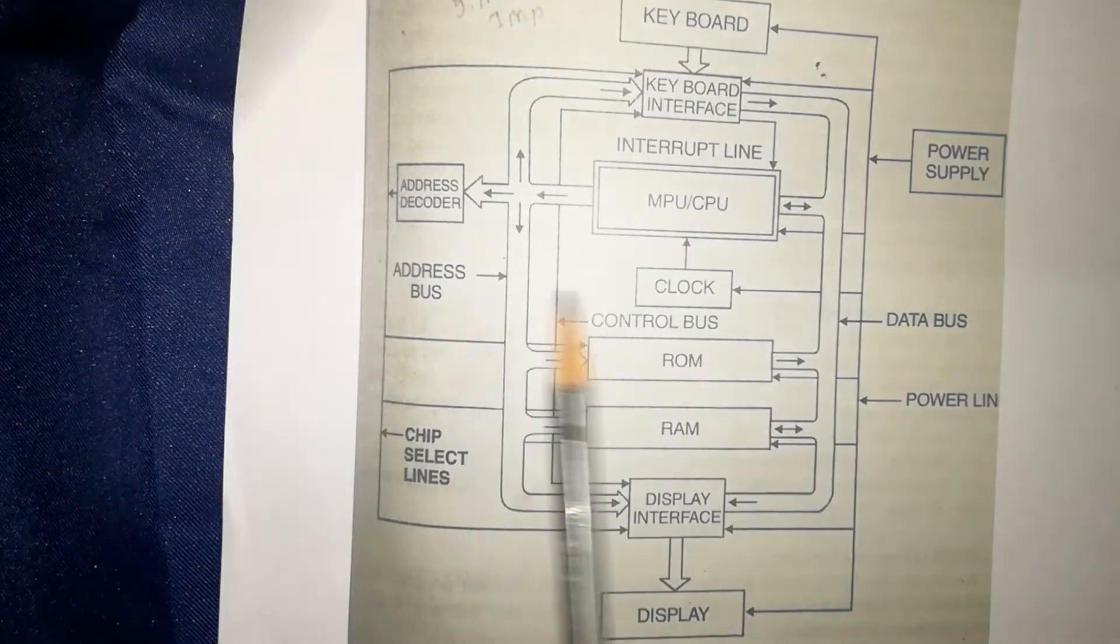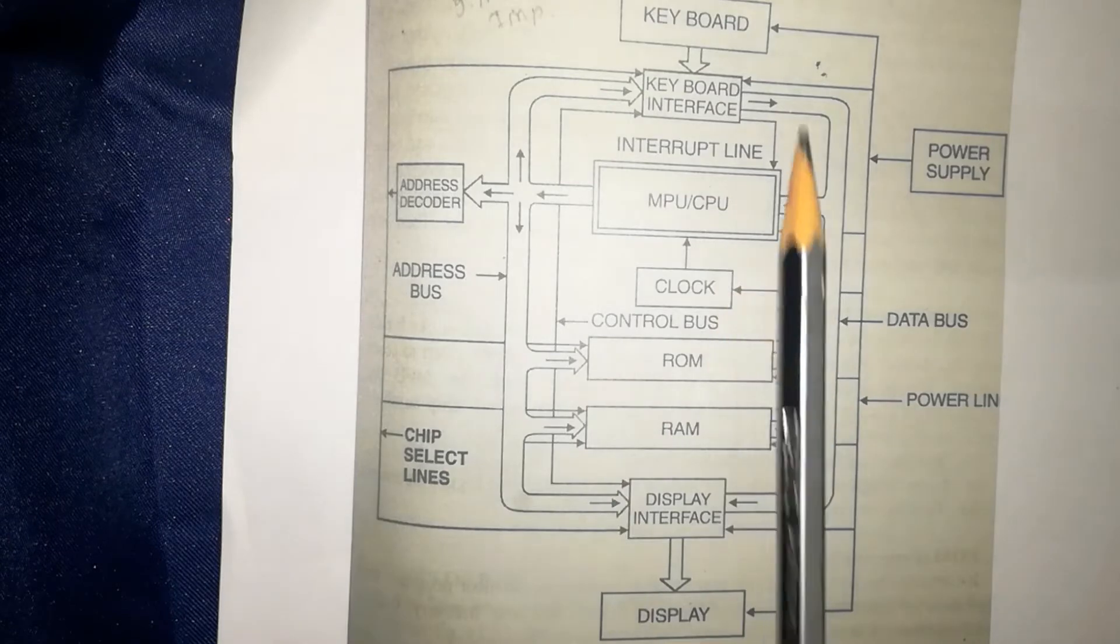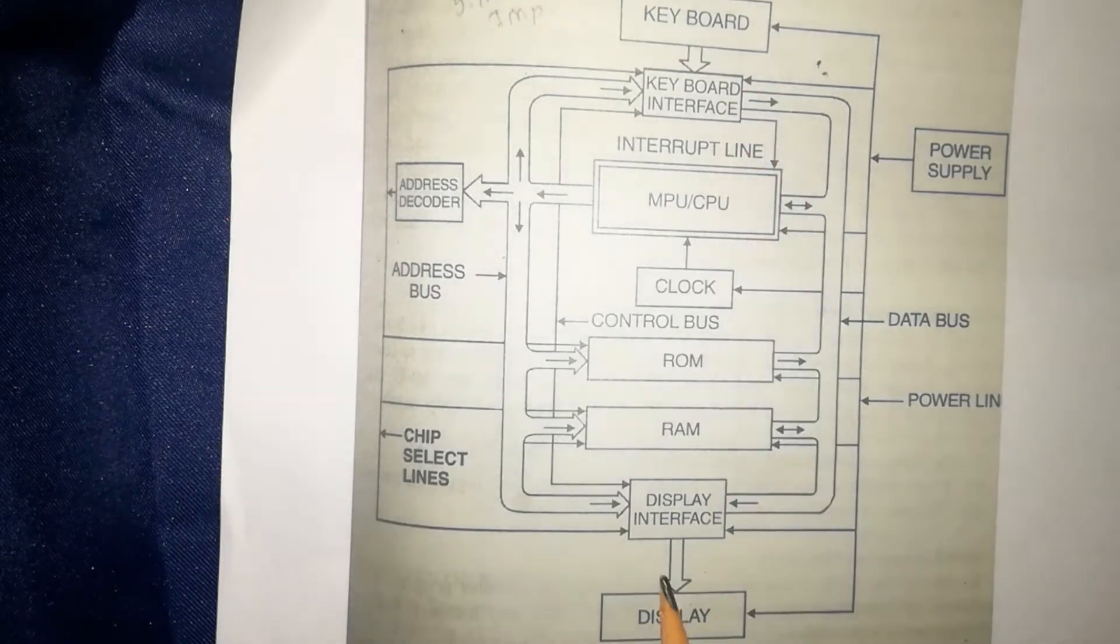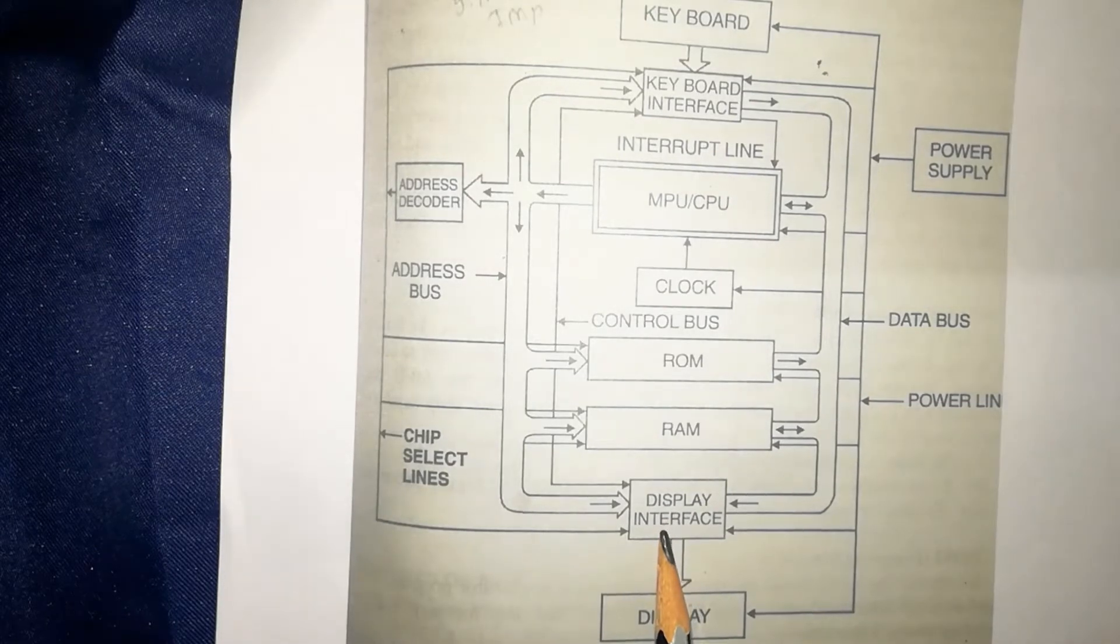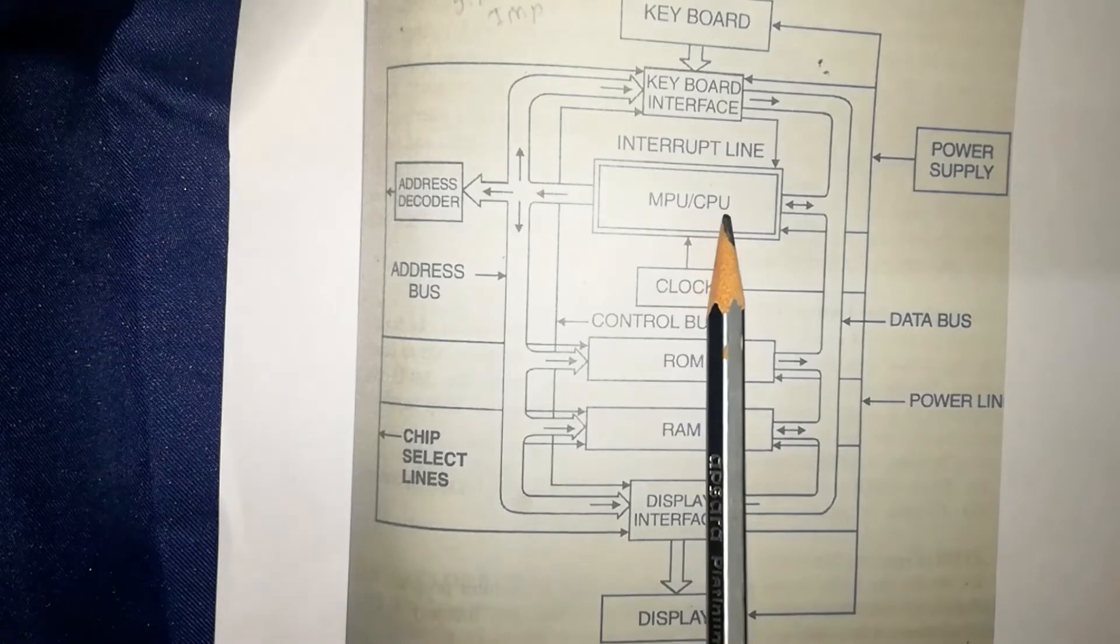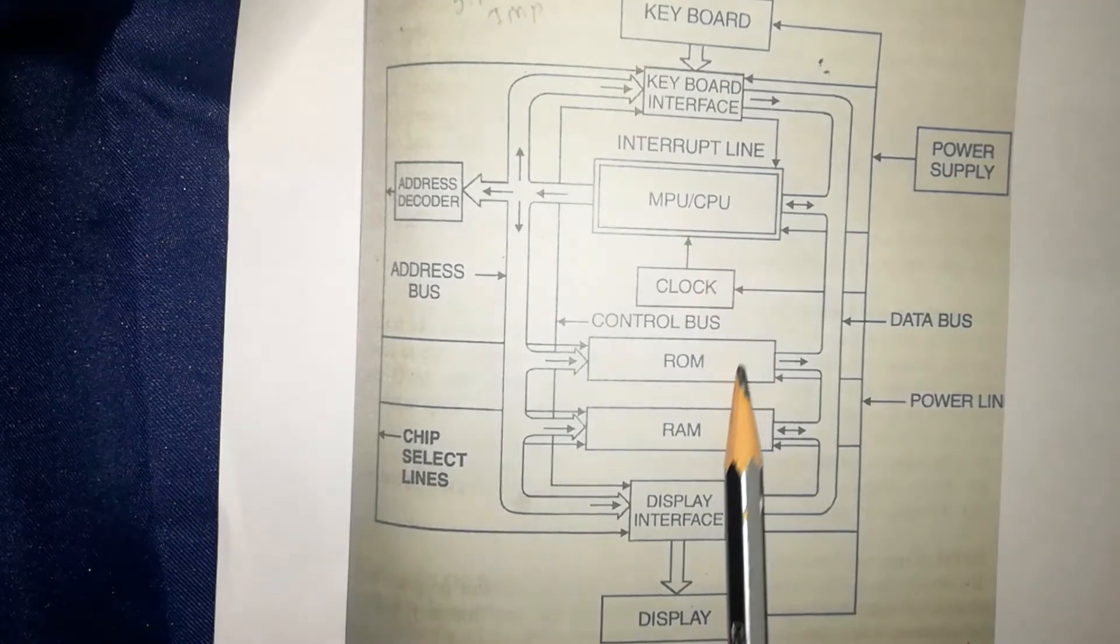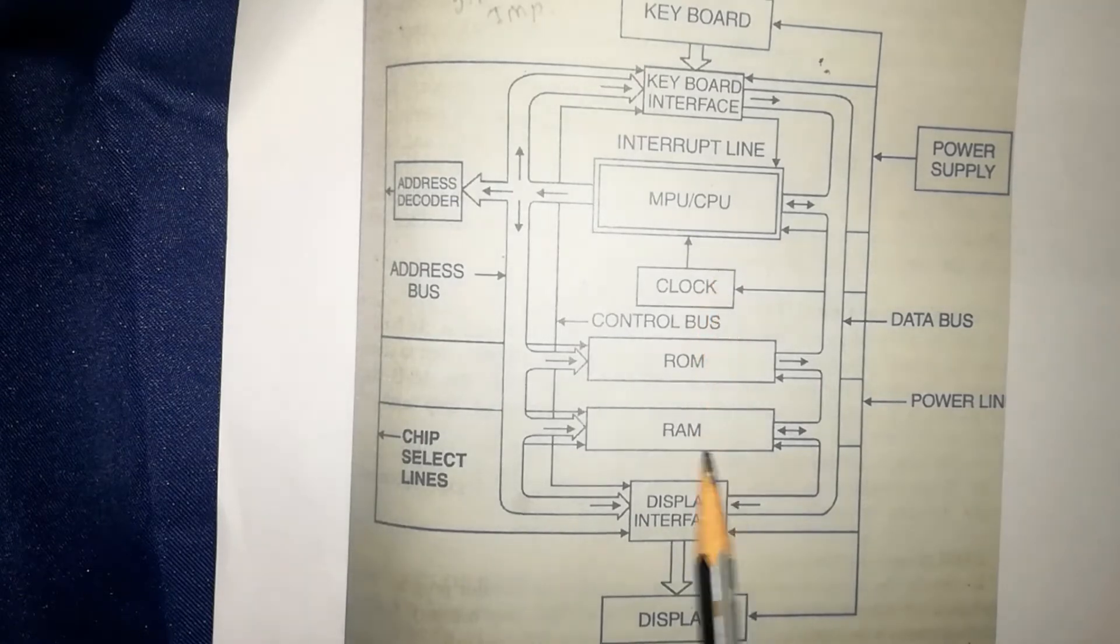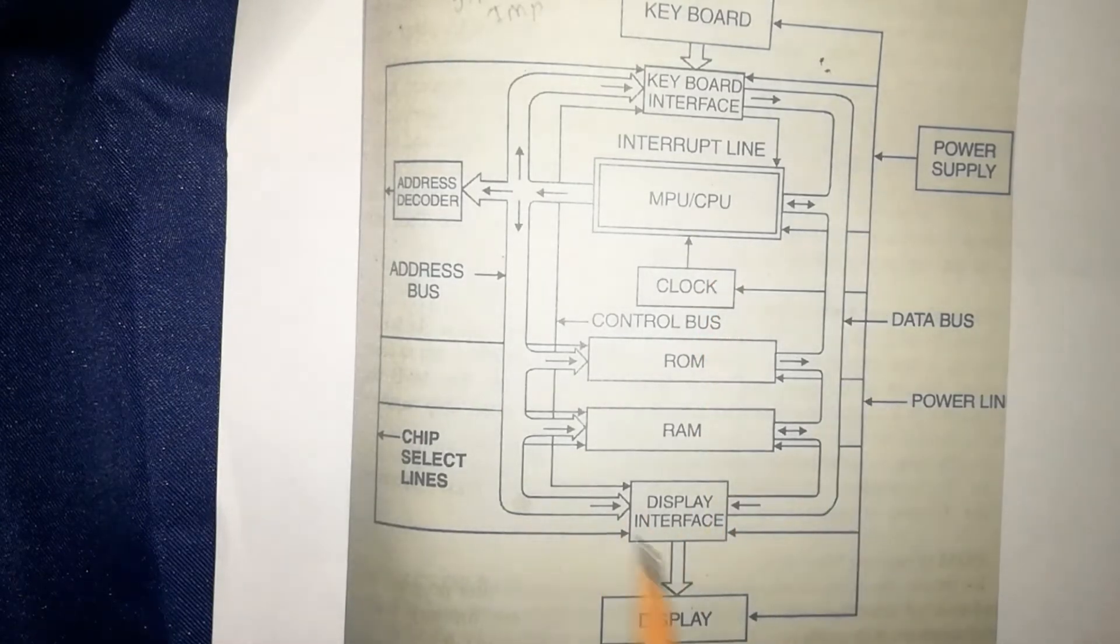Here you can see various types of buses such as address bus, data bus, control bus, input device keyboard, keyboard interface, output device display and display interface, microprocessor unit or also called as CPU, ROM, RAM, clock, and some power lines and power supply.